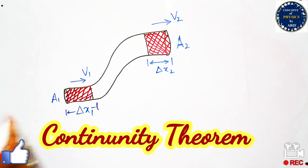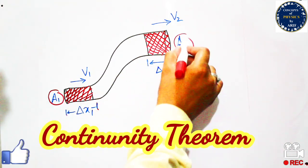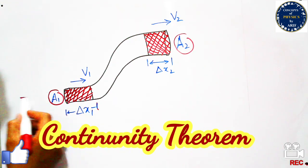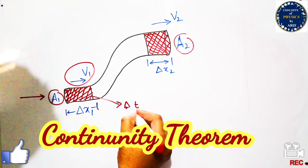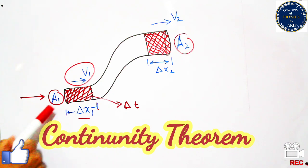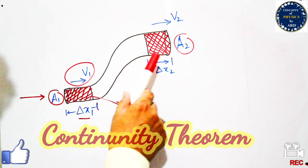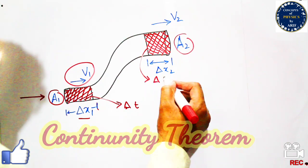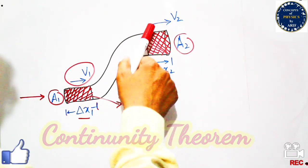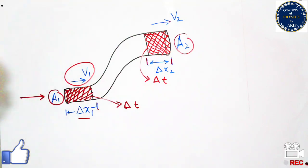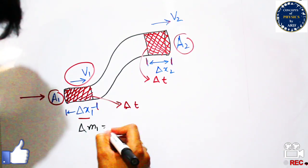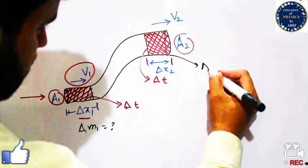In this case we consider that area A1 is not equal to area A2. The fluid is moving in this direction having velocity v1, and for a small time interval delta t it covers a small distance delta x1, where the area of this region is A1. After that, the fluid exits the pipe with velocity v2, covering a small distance delta x2. We need to calculate the mass delta m1 and mass delta m2 of these two regions.